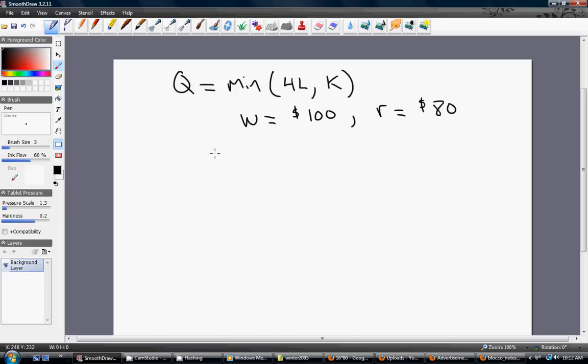And what we want to find here is, what is the minimum cost of producing 16 units of output? What's the minimum cost of producing 16 units of output?